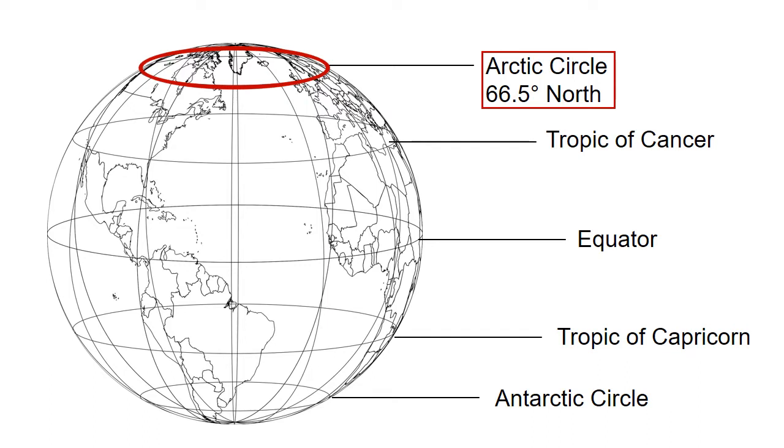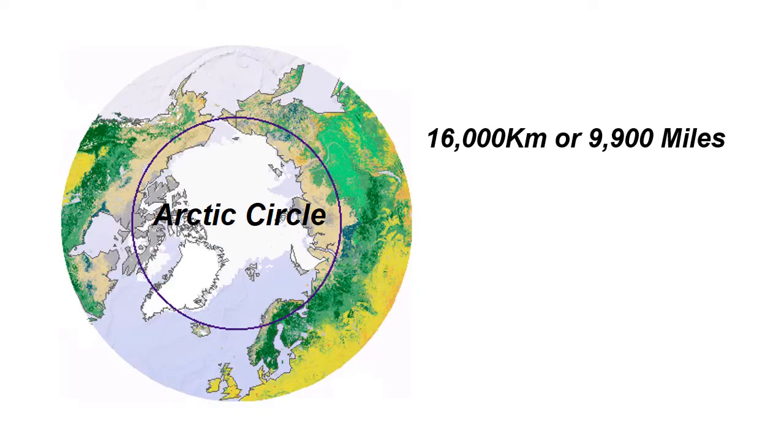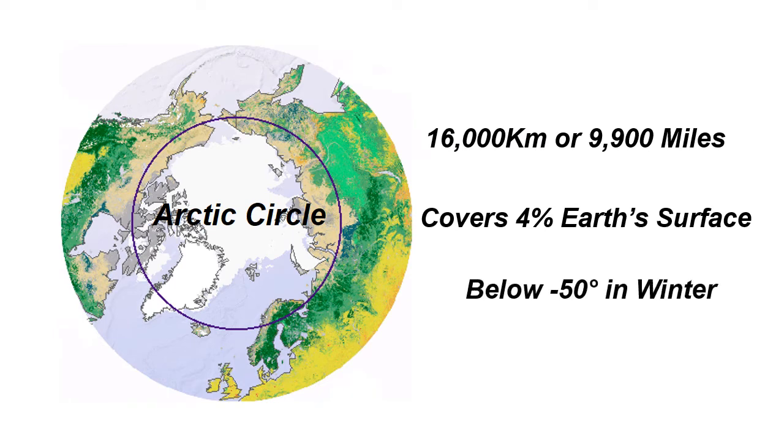It is a parallel latitude that runs north of the equator. The Arctic Circle is roughly 16,000 kilometers or 9,900 miles in circumference and covers roughly 4% of Earth's surface. The Arctic Circle experiences extreme cold. The temperature can sometimes fall below minus 50 degrees in winters.